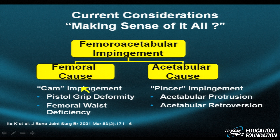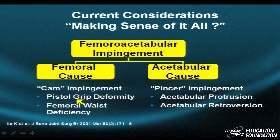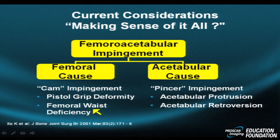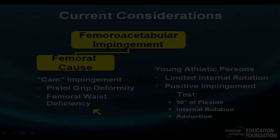Femoral dominant causes are associated with cam type impingement. Classic associated abnormalities include loss of the normal tapered neck — when the neck is really wide on one side, this is called the pistol grip deformity, also known as femoral waist deficiency, where the femur doesn't make a nice delicate waist. Pincer manifestations include acetabular protrusion — a cup that's too deep — or an anterior wall of the acetabulum that is too long, forcing the femoral head backwards in so-called acetabular retroversion.